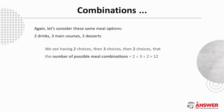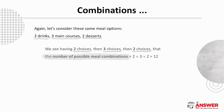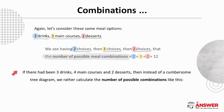Let's expand our thinking now on the number of combinations. If we again consider our same meal options, we see having two choices, then three choices, then two choices, that the number of possible meal combinations is two times three times two, which equals 12. What if there had been three drinks, four main courses and two desserts?